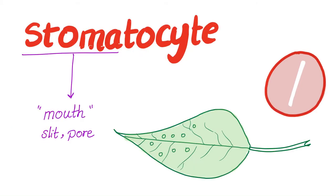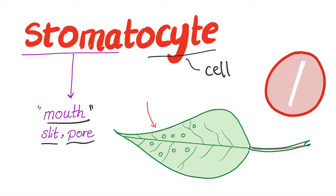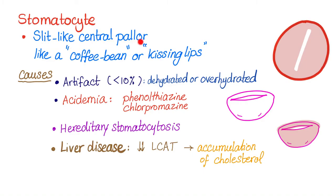Let's get some terminology or nomenclature here. We have 'stomato' and 'cyte.' Cyte, of course, means cell. How about stoma? Stoma means mouth, a slit, or a pore. If you remember your old science classes, the green leaf had some pores called stomata through which the plant can breathe. So stomatocyte — the cell that has a mouth or a slit in it. Again, stomatocyte has a slit-like central pallor, like a coffee bean, which is kind of romantic, or kissing lips, which is even more romantic. See how doctors have great imagination?